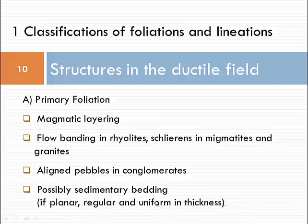A primary foliation could be a magmatic layering — a foliation that forms when the rocks form — and also flow banding in rhyolites or schlieren in migmatites and granites, because all these features that form repeated and uniform planar features can be classified as foliations. In the sedimentary field, aligned pebbles in a conglomerate or sedimentary bedding, if planar and regular and uniform in thickness, can also define a foliation.